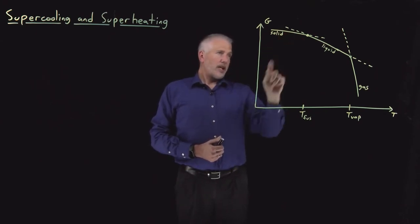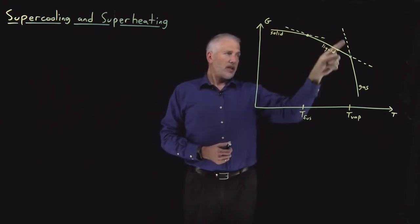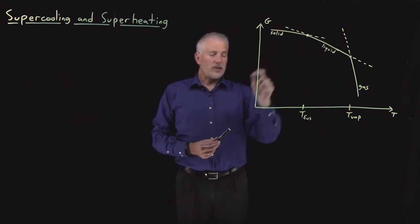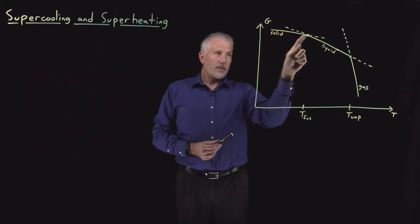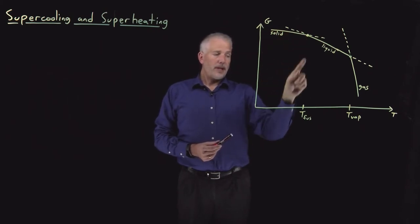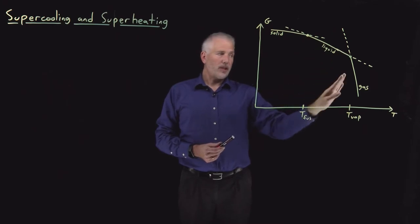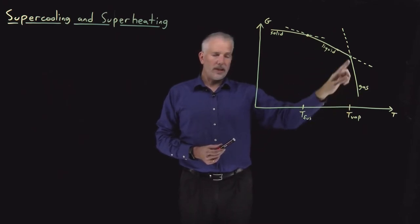On this version of the diagram, I've included as dotted lines the phases that are not the most stable phase. At cold temperatures where the solid is most stable, the solid has the stable line. Once we pass the melting point where the liquid is the most stable phase, that's the one with the solid line. At high temperatures above the boiling point, the gas has the solid line.